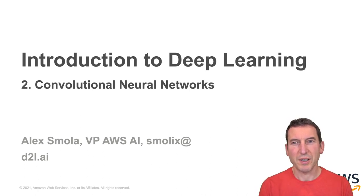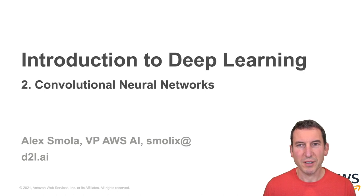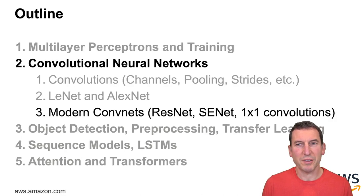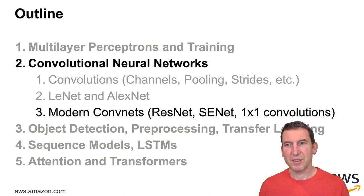Welcome to the last part of the ConvNet chapter. This is part of the crash course on deep learning and today we're going to cover modern convolutional networks. So that's ResNet, SeNet, SqueezeExciteNet, one-by-one convolutions and related things, ShuffleNet and so on.